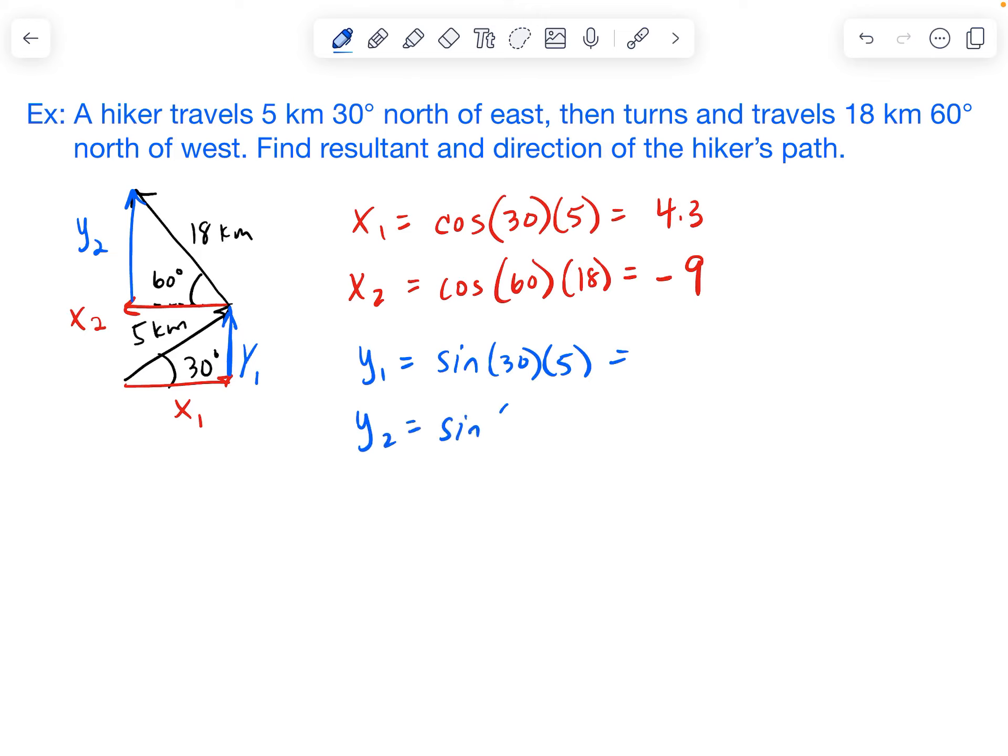And y2 is going to be the sine of 60 times 18. So let's go ahead and calculate these. Sine of 30 times 5 gives me 2.5. And sine of 60 times 18 gives me 15.6.